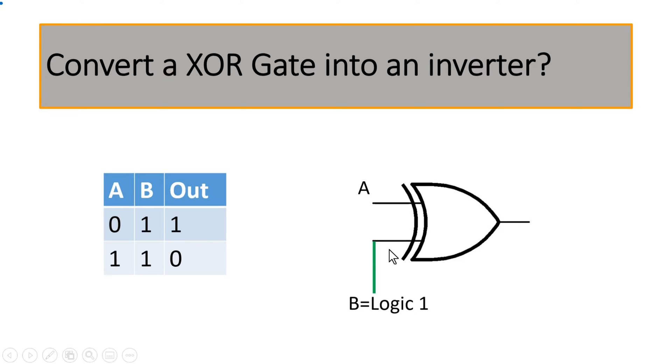If you fix one of the input of XOR gate to logic 1, then this circuitry will start acting as an inverter. Now at the output of XOR gate we will start getting the inverted value of input A.